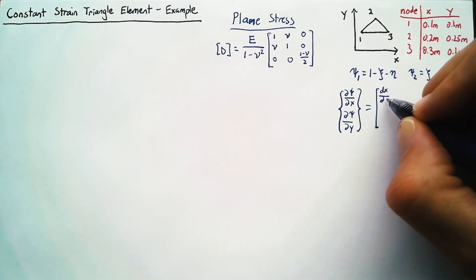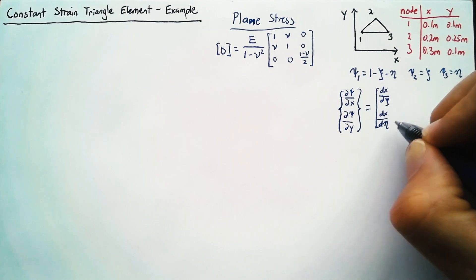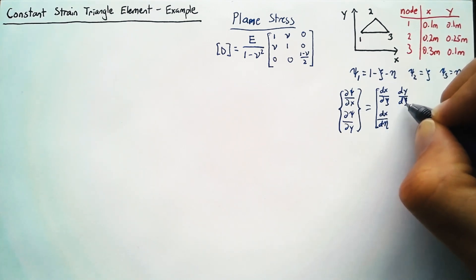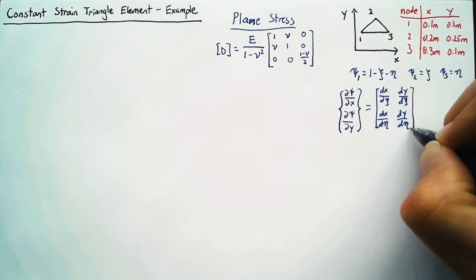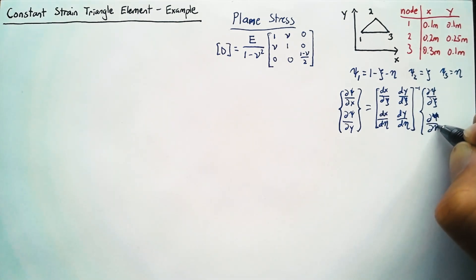which consists of derivative of x's and y's with respect to xi's and eta's. And that's multiplied by the very easy to find d psi d xi and d psi d eta.